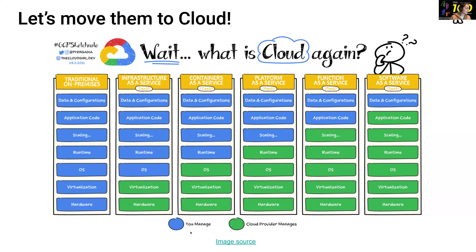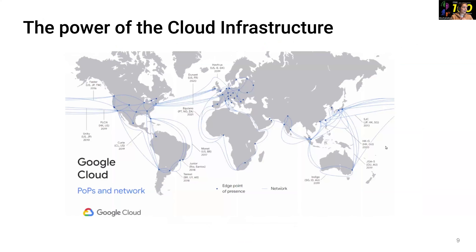Just to recap: the blue color is something you manage, and the green color is something the cloud provider manages for you. The most cool thing is: if it fails, it's their problem and their agreement to deliver. I'll share a picture of Google Cloud infrastructure — when you take a Google Cloud course, they first impress you by showing how Google's infrastructure is distributed around the world.